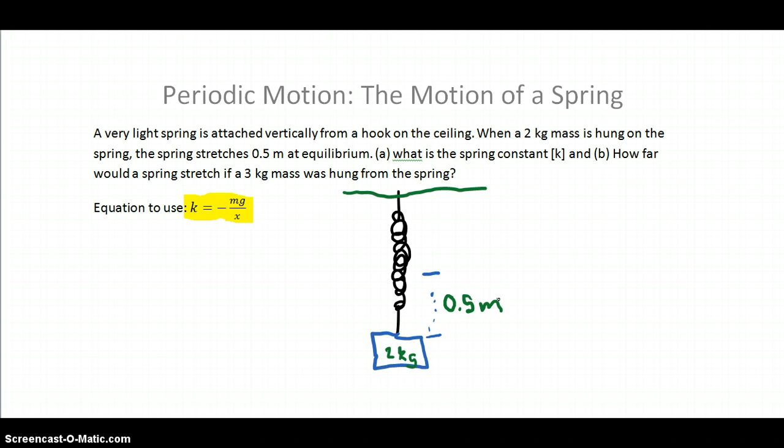Now, we're given everything we need to solve for the spring constant, so let's go ahead and do that. First of all, I want to note what we're going to be filling in all these variables with. k is what we're looking for, the spring constant. That's a question mark. The mass is given right here. This right here is the mass. And this x is given right here.